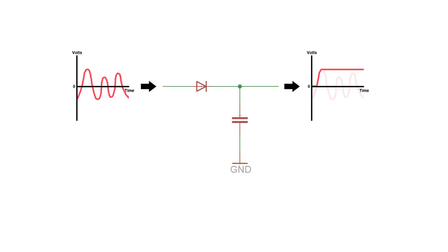It works because the diode only allows current to flow forwards. Then the capacitor gets charged, and since the capacitor has no path to discharge, it stays charged at the peak voltage.